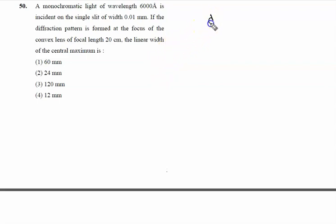Monochromatic light of wavelength 6000 angstrom, 6000 x 10 raised to the power minus 10 meter, is incident on a single slit of width 0.01 mm, so 10 raised to the power minus 5 meter.